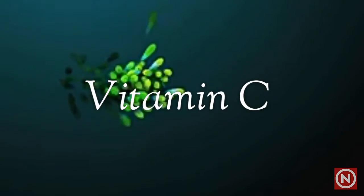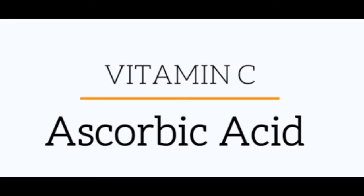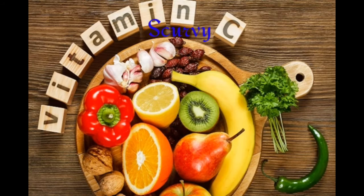Vitamin C: constituent — ascorbic acid. Deficiency disease — scurvy. Sources — amla, guava, chilies, kiwi, broccoli, orange, papaya, lemon, etc.